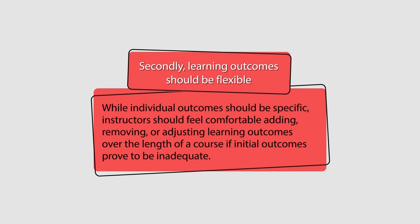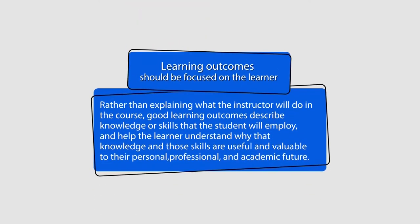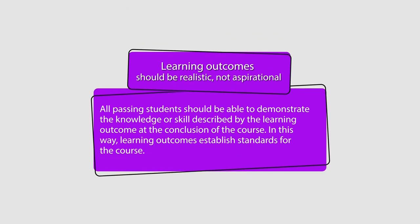Secondly, learning outcomes should be flexible. While individual outcomes should be specific, instructors should feel comfortable adding, removing, or adjusting learning outcomes over the length of a course if initial outcomes prove to be inadequate. Learning outcomes should be focused on the learner rather than explaining what the instructor will do. Good learning outcomes describe knowledge or skills that the student will employ and help the learner understand why that knowledge and those skills are useful and valuable to their personal, professional, and academic future.